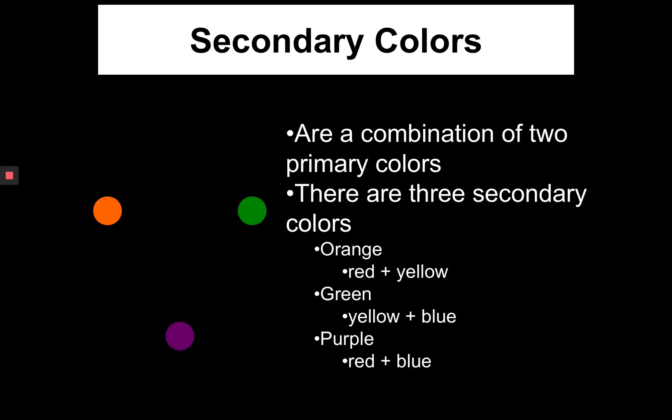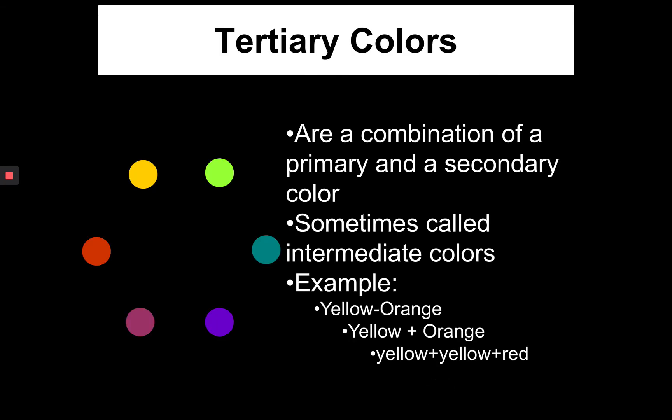Secondary colors are orange, green, and purple. Purple is often called violet by artists, even though violet references light. Tertiary colors, sometimes called intermediate colors, are a combination of a primary and secondary.